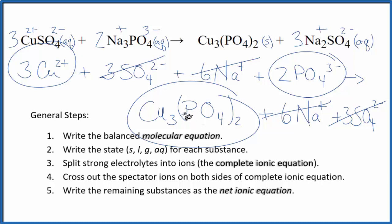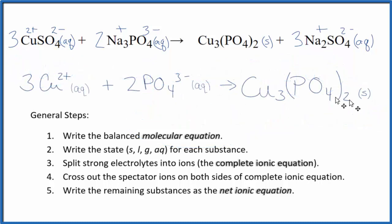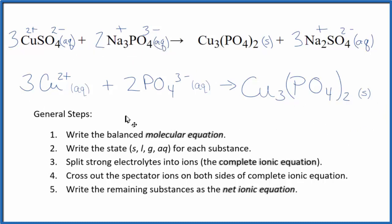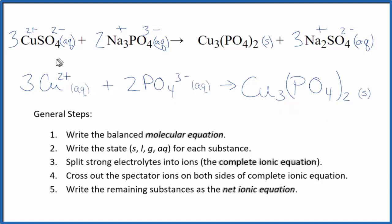I'll clean this up and add the states, and we'll have our net ionic equation for copper 2 sulfate plus sodium phosphate. We have the same number of each type of atom on both sides, so it's balanced, and the charge balances out as well. This is Dr. B with the balanced net ionic equation for copper 2 sulfate and sodium phosphate — thanks for watching.